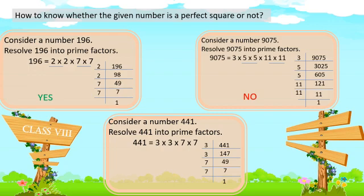Let's consider the number 441. When we do its prime factorization, we get its factors as 3 × 3 × 7 × 7. We have two 3s and two 7s — the 3s are in a pair and the 7s are in a pair. Since all factors are in pairs, this given number 441 is a perfect square.